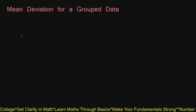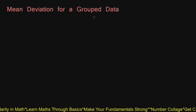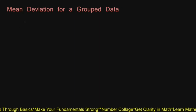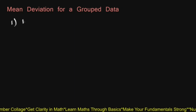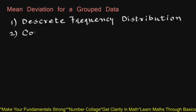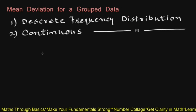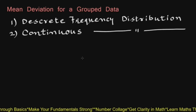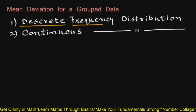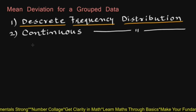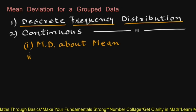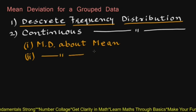Now we will see how to find mean deviation for grouped data. We know that data can be grouped in two ways: first, as a discrete frequency distribution, and second, as a continuous frequency distribution. First, let us discuss how to find mean deviation for a discrete frequency distribution — finding mean deviation about the mean, and also mean deviation about the median.